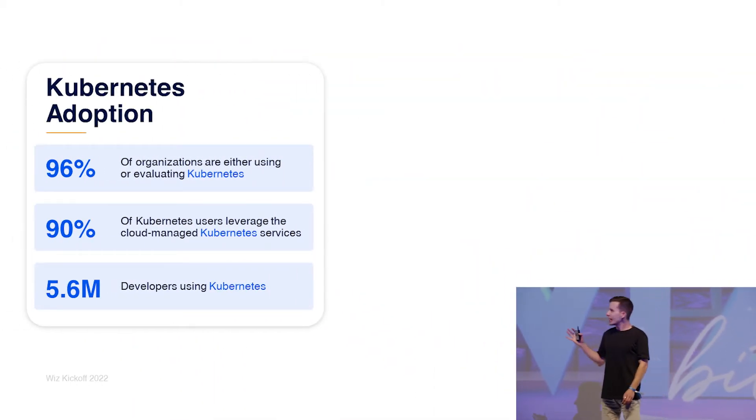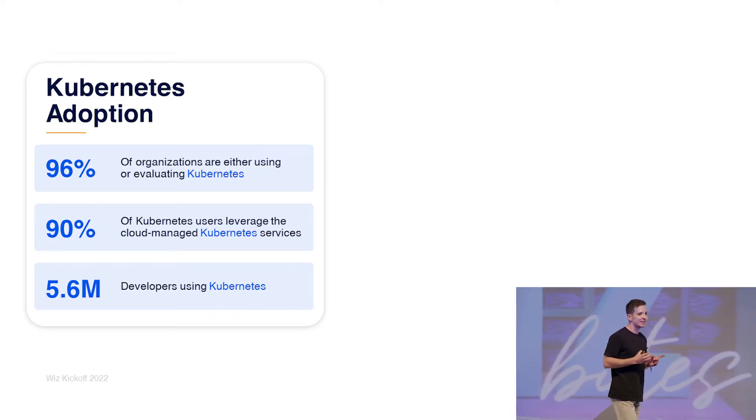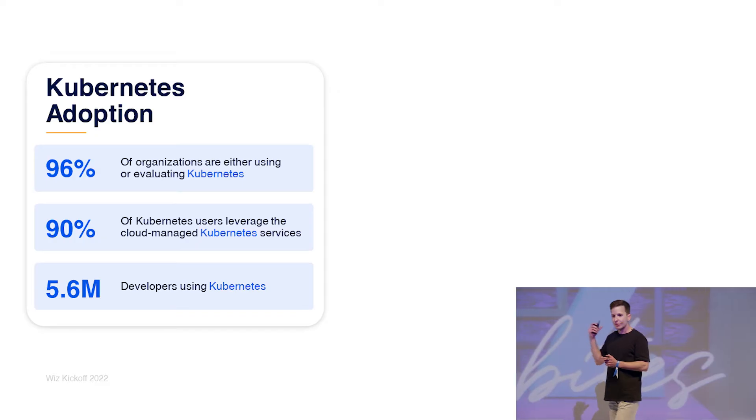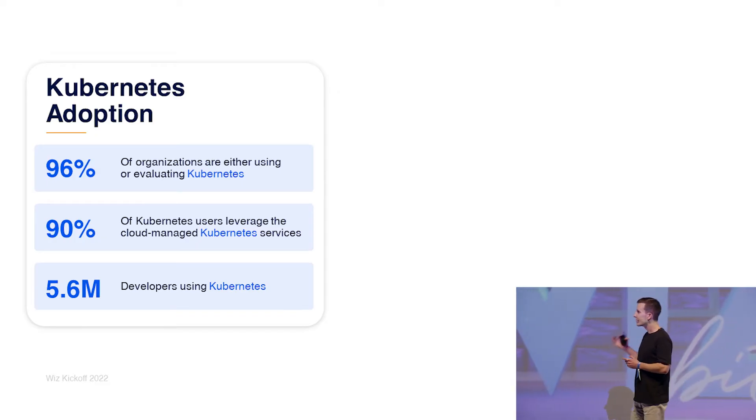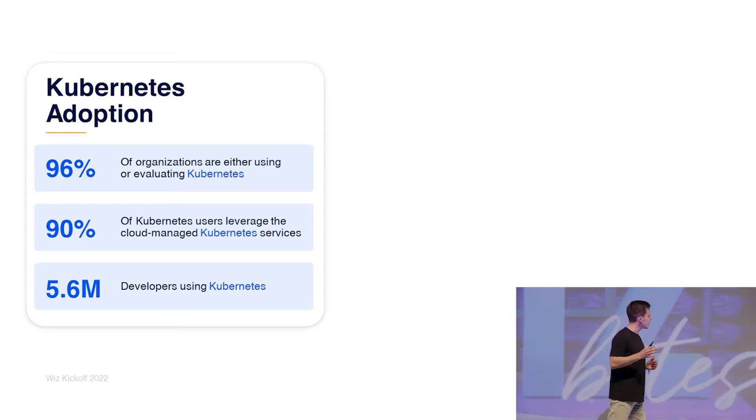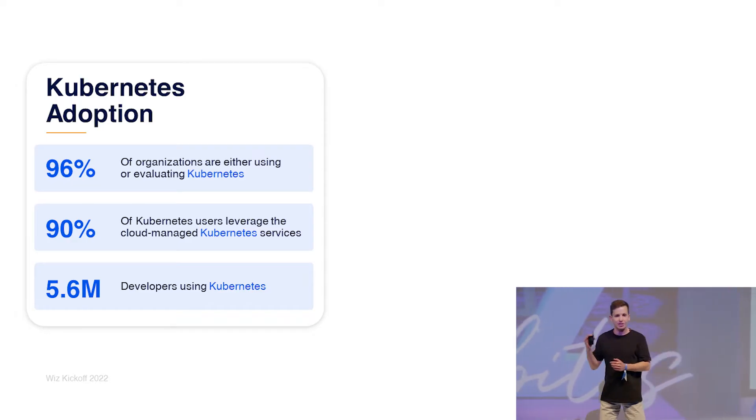In the past few years, Kubernetes has become the mainstream way for running containerized applications. According to the Cloud Native Foundation survey, 96% of organizations are currently either using or evaluating Kubernetes. More interestingly, 90% of Kubernetes users leverage cloud-managed Kubernetes services, which means they mostly run in the cloud. We're talking about 5.6 million developers using Kubernetes today — 67% more than the year before. That's roughly every third back-end engineer.